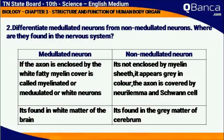Non-medulated neurons are not enclosed by the myelin sheath. Medulated neurons are also called white neurons because the myelin cover is white and fatty. They form the white matter of the brain, while non-medulated neurons form the grey matter of the cerebrum and are covered by neurolema and Schwann cells.